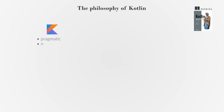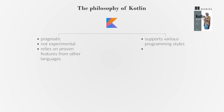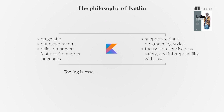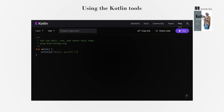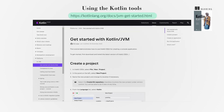Kotlin is pragmatic, not experimental, and relies on proven features from other languages. It supports various programming styles and focuses on conciseness, safety, and interoperability with Java. Tooling is essential, with IDEs like IntelliJ IDEA providing a productive coding experience. Kotlin can be tested quickly using the online playground or fully explored in IntelliJ IDEA or Android Studio. The Kotlin plugin for these IDEs offers a robust development environment.